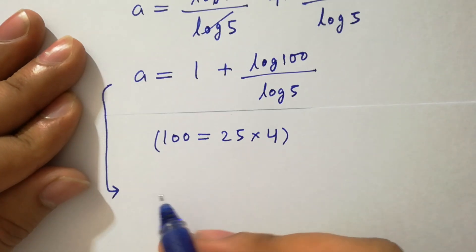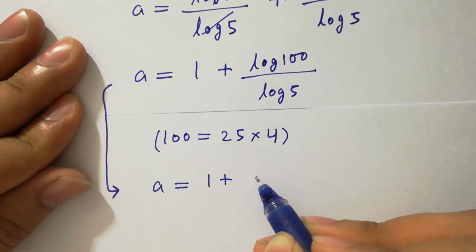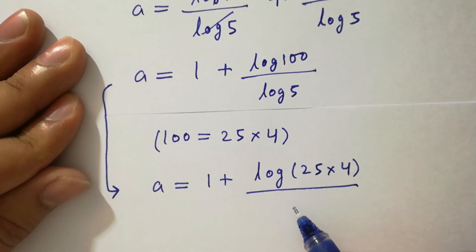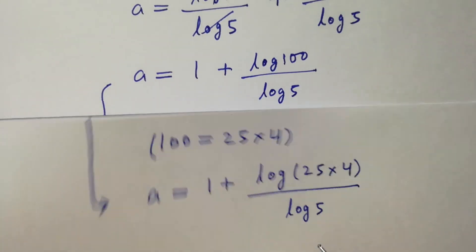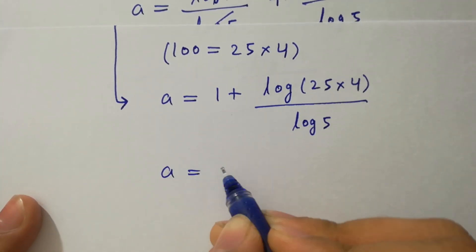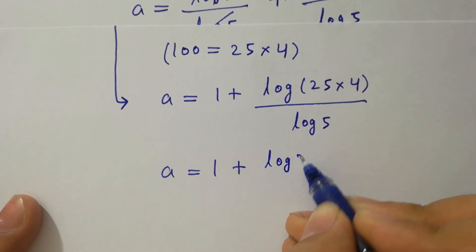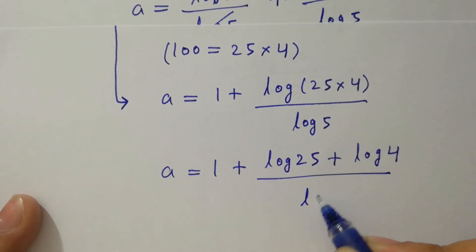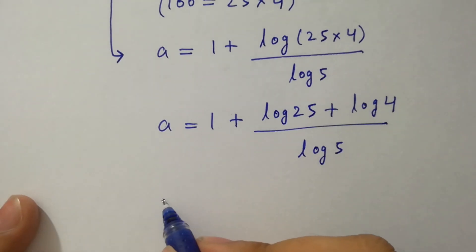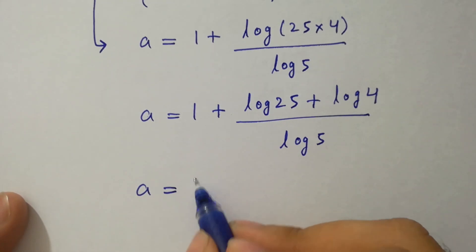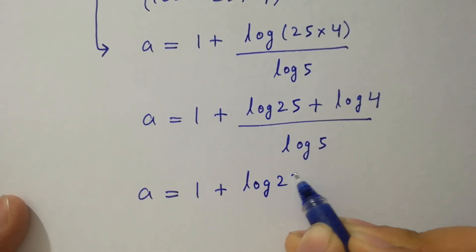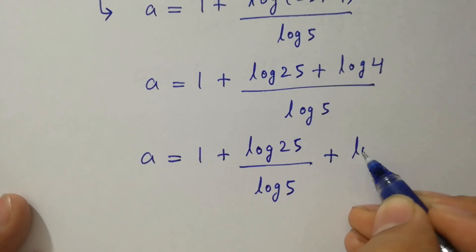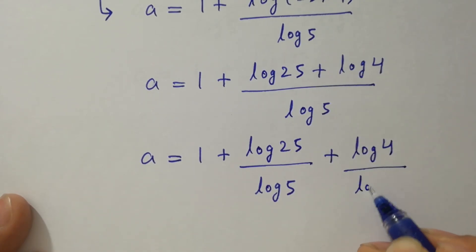A will be equal to 1 plus log 25 times 4 over log 5. Applying the product rule again: a equals 1 plus log 25 plus log 4, over log 5. This gives a equals 1 plus log 25 over log 5, plus log 4 over log 5.